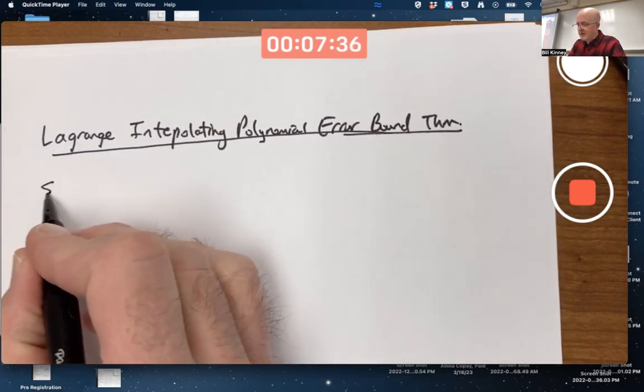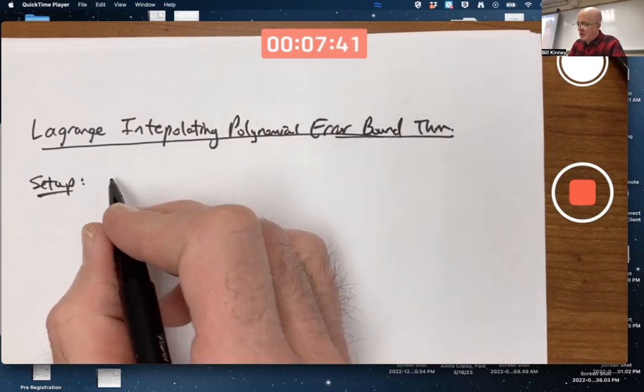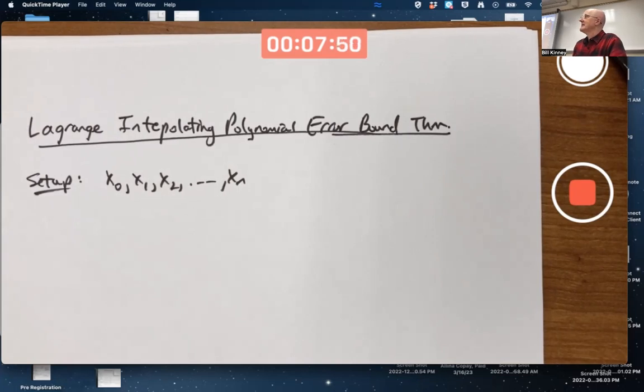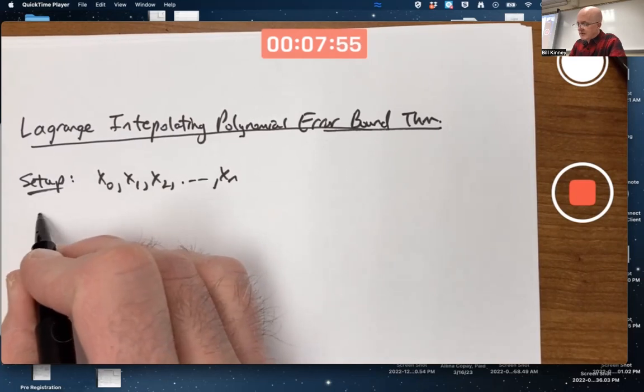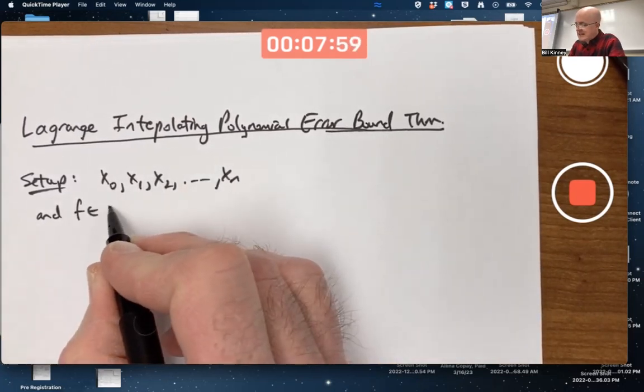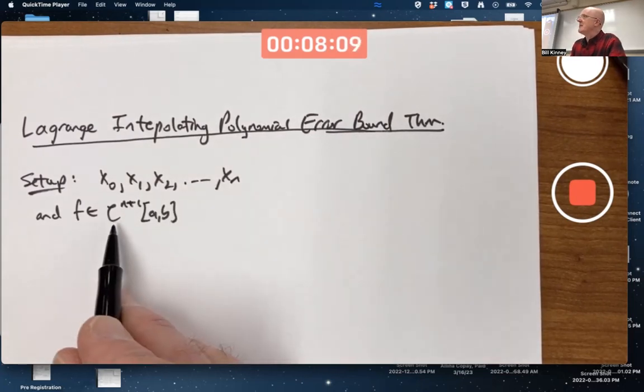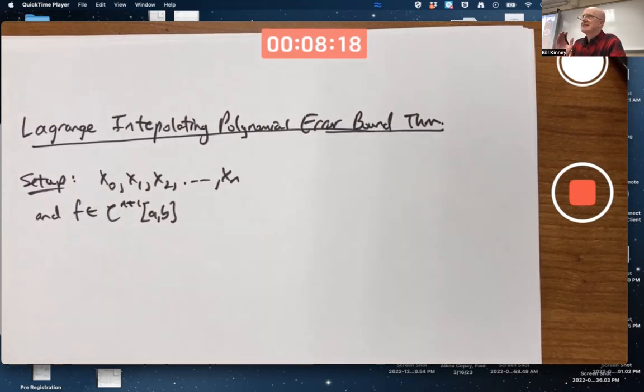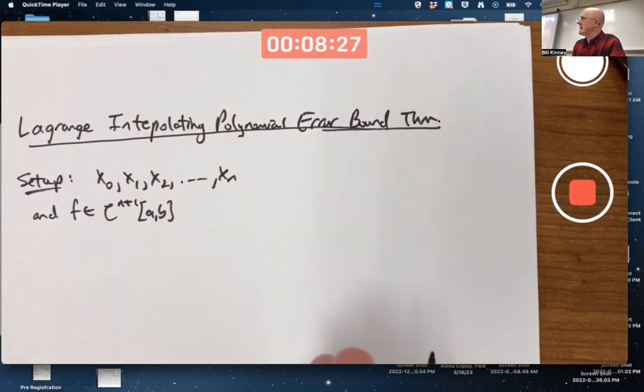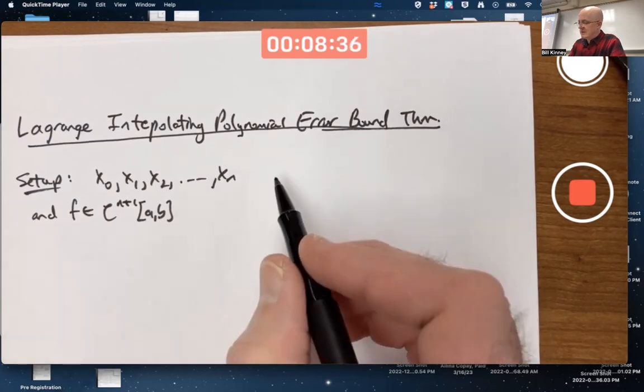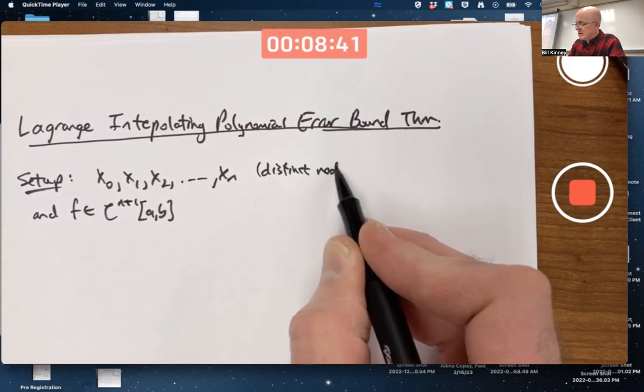The setup is that you've got n plus 1 nodes labeled x0, x1, x2 through xn, and f is a nice function. In fact, it's in C^(n+1) of some interval from a to b. So what does that mean? n plus 1 times continuously differentiable, meaning n plus 1 derivatives exist and are all continuous functions on this interval. That's the minimum niceness you need in the function for this theorem to work. These are distinct nodes, no repeats there.